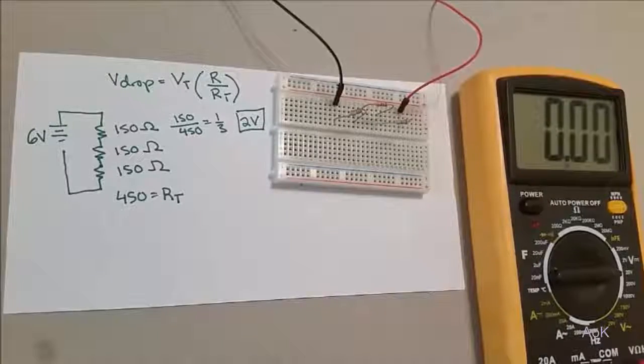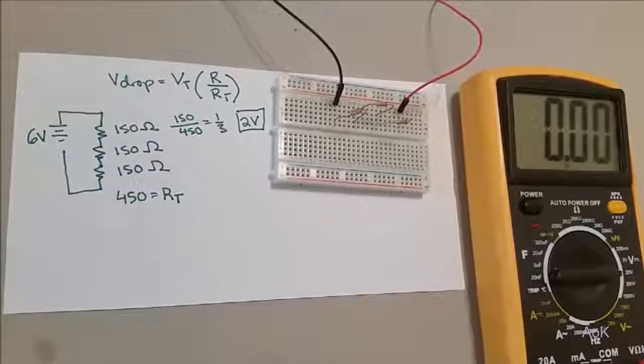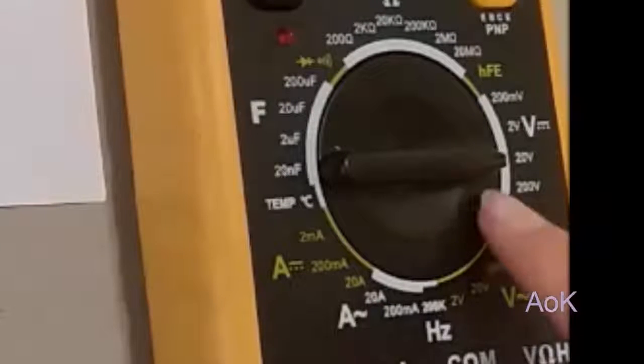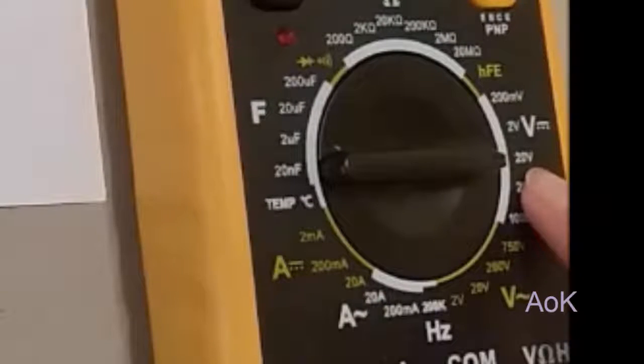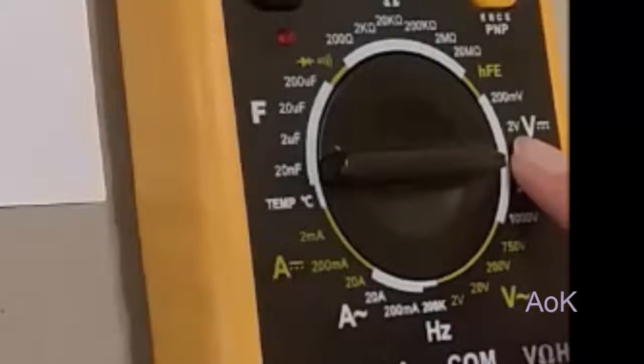Now let's use the multimeter to see if our calculations were correct. Put the knob of your multimeter to 20 volts. We could use 2 volts, but since that's our estimate, we want to go one step higher.